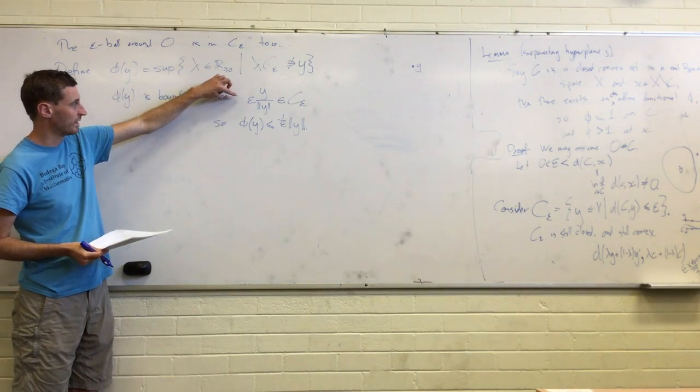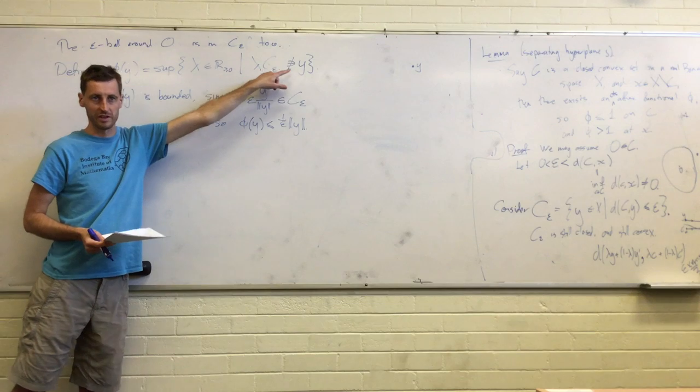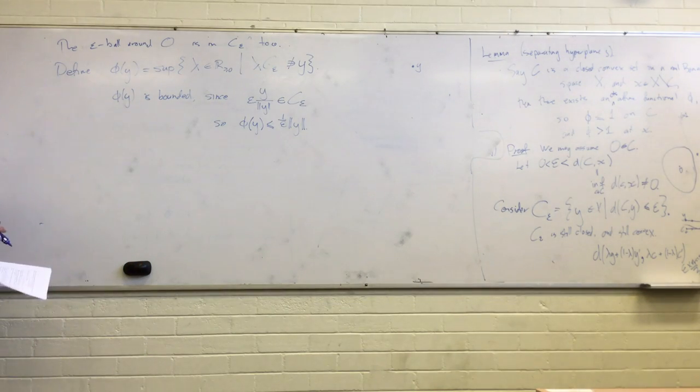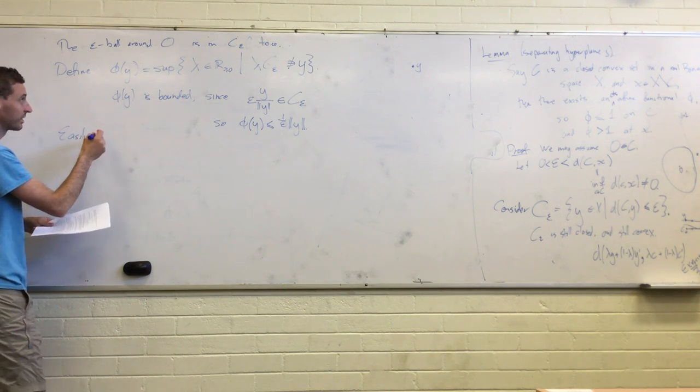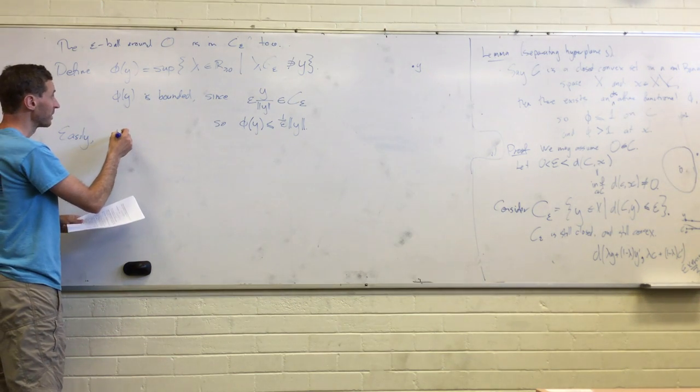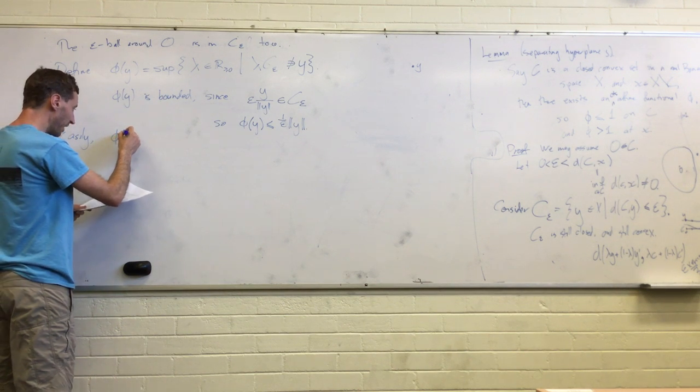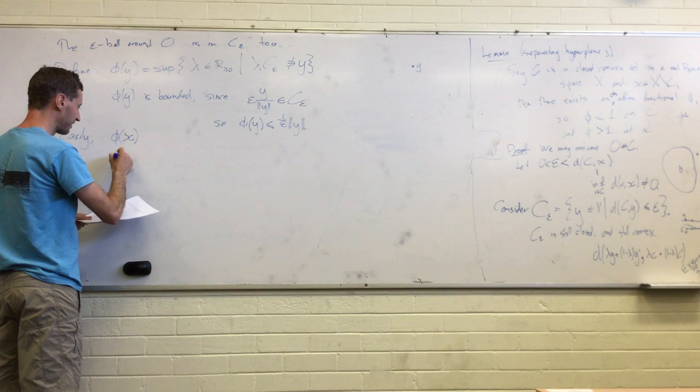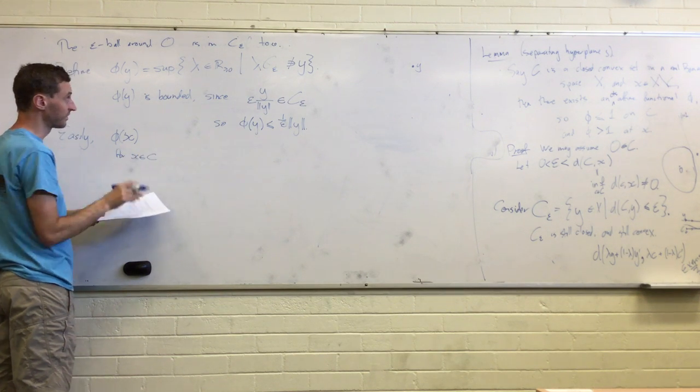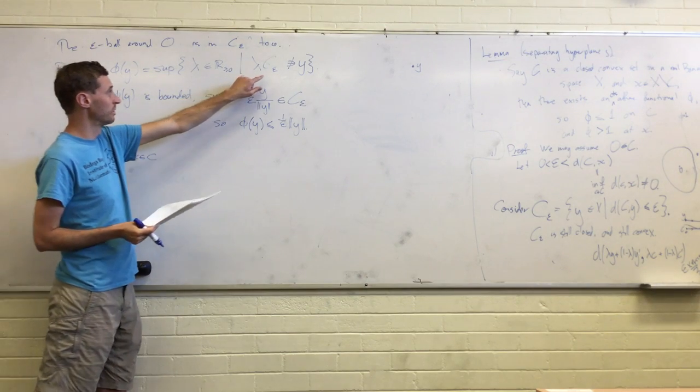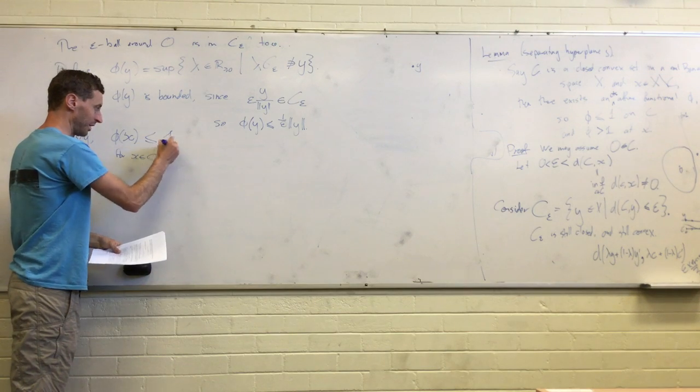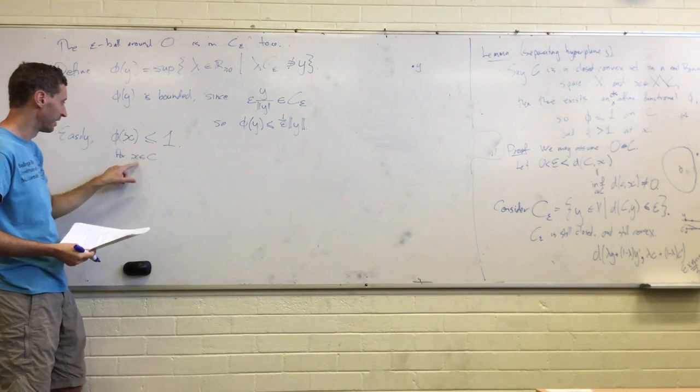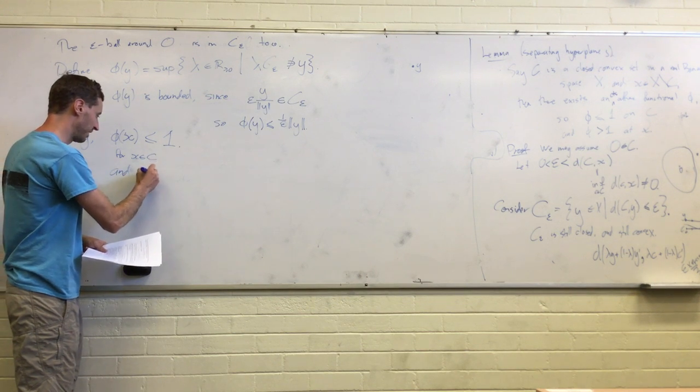I want to say phi(y) is bounded because of this first property. So it's bounded since—let's see, if we take y divided by the norm of y times epsilon, that's certainly in C-epsilon because it's in that unit ball. And so that tells us that phi(y) is at most the norm of y over epsilon. So if you scale this point up by that much, you obviously get exactly y. So phi is, in fact, bounded by one over epsilon. But then we're now pretty much done.